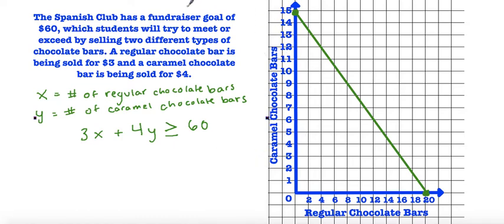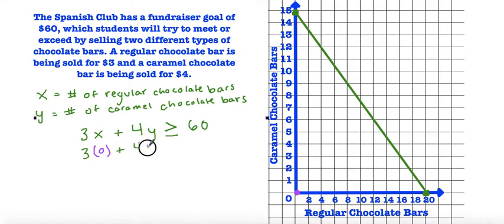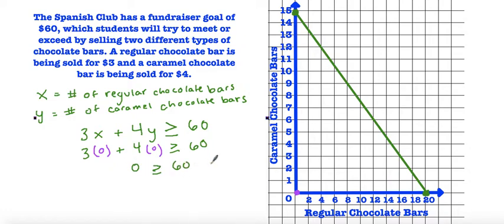Now we're going to see where we're going to shade. The easiest point to test is (0, 0). So 3 times 0 plus 4 times 0 is greater than or equal to 60 — that gives us 0, and 0 is not greater than or equal to 60. This is not true.